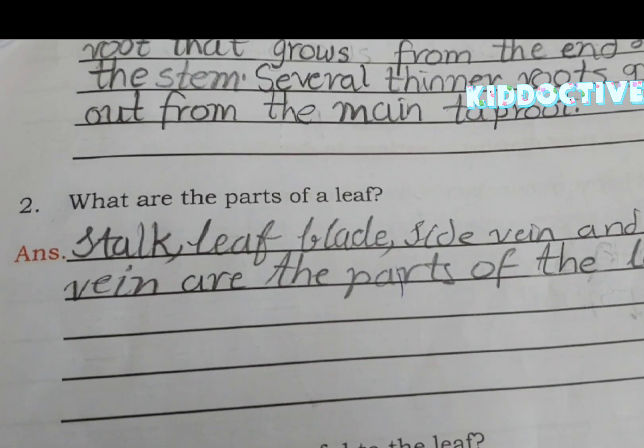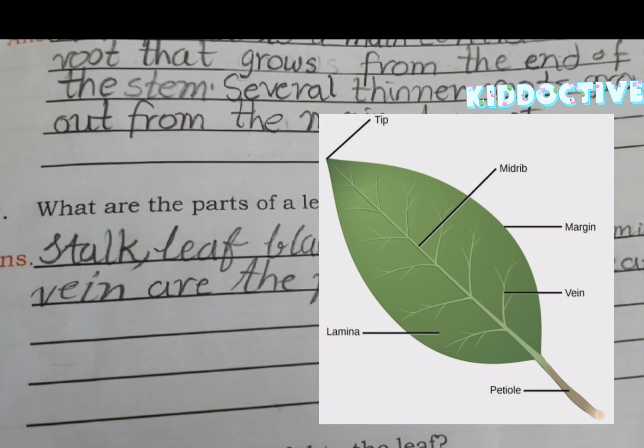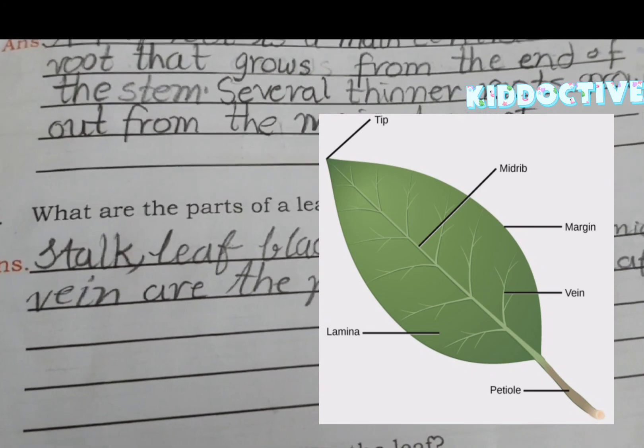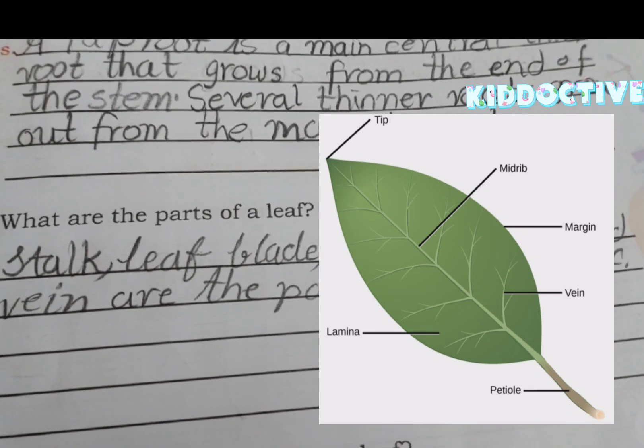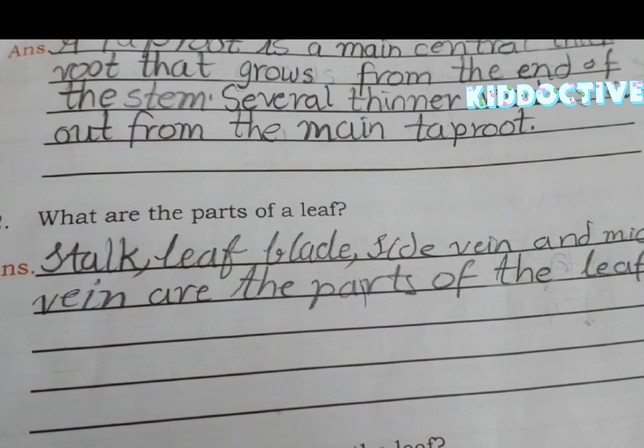What are the parts of a leaf? The parts of a leaf are stock, leaf blade, side vein and mid vein.